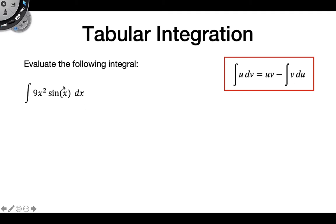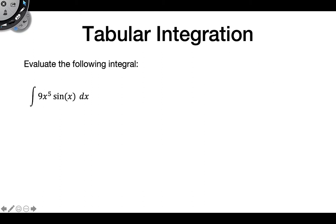You might remember this problem from the previous video: the integral of 9x squared sine of x dx. What was interesting about this problem is we had to do integration by parts twice to get it done, because of this x squared, we had to take two different derivatives. So what happens if I make this problem more complicated: 9x to the fifth times sine of x dx? That's a lot more integration by parts — about five times. This is where tabular integration really comes in handy.